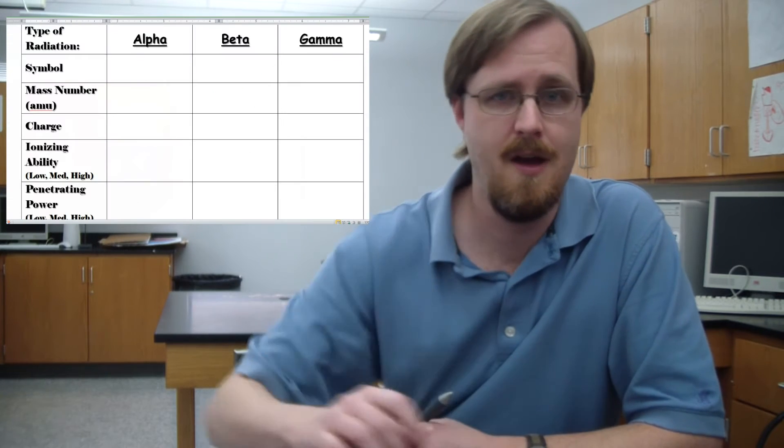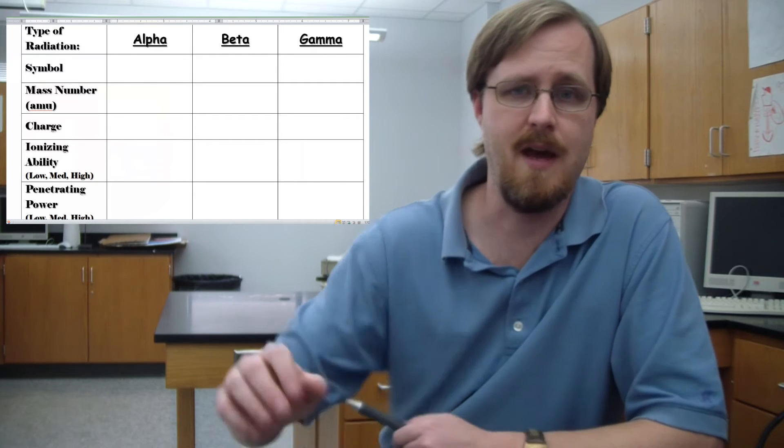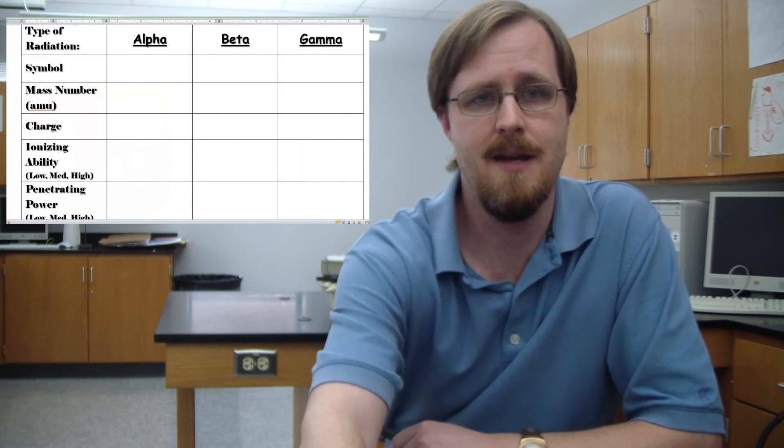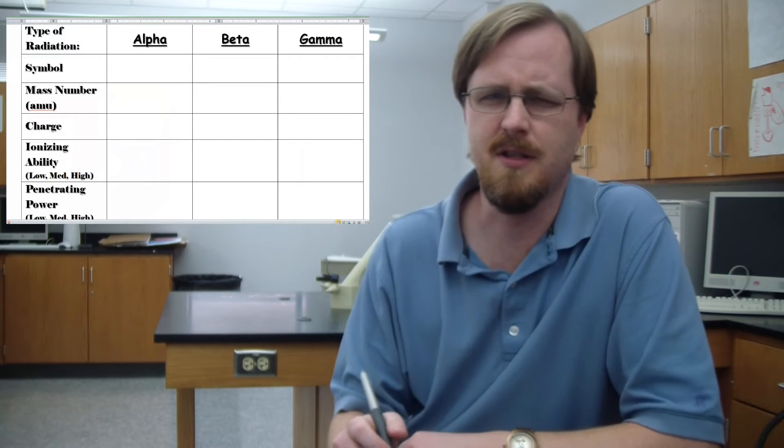And there are actually three different types of decay. As you can see here, we've got alpha, beta and gamma. So let's talk about what each of these are.